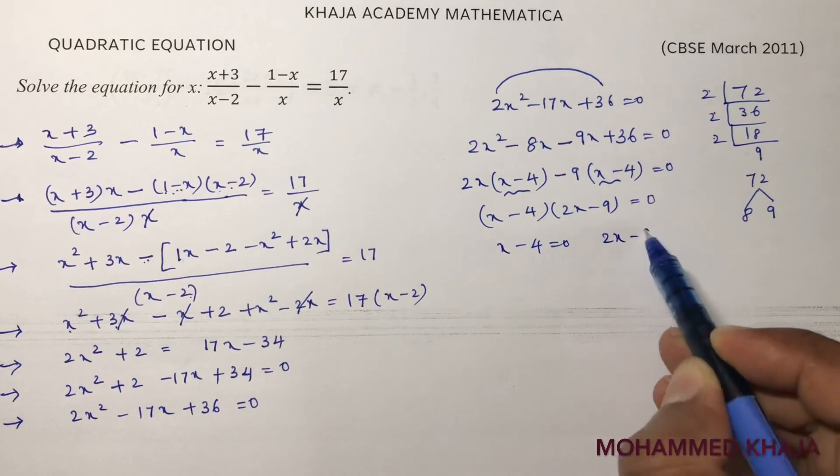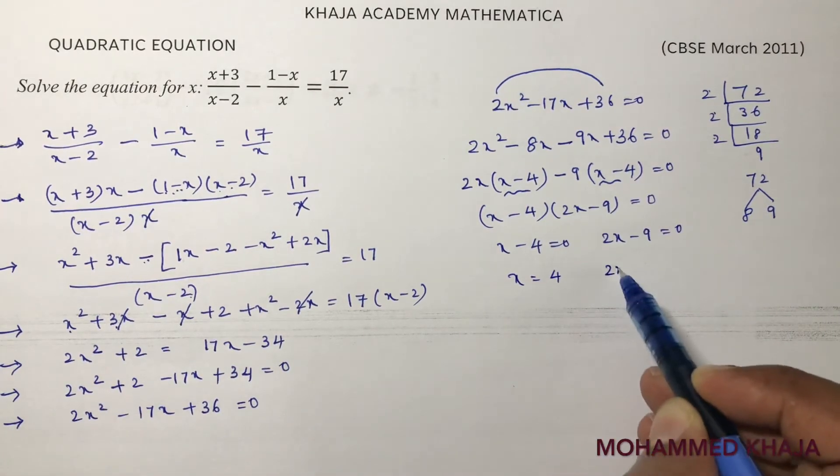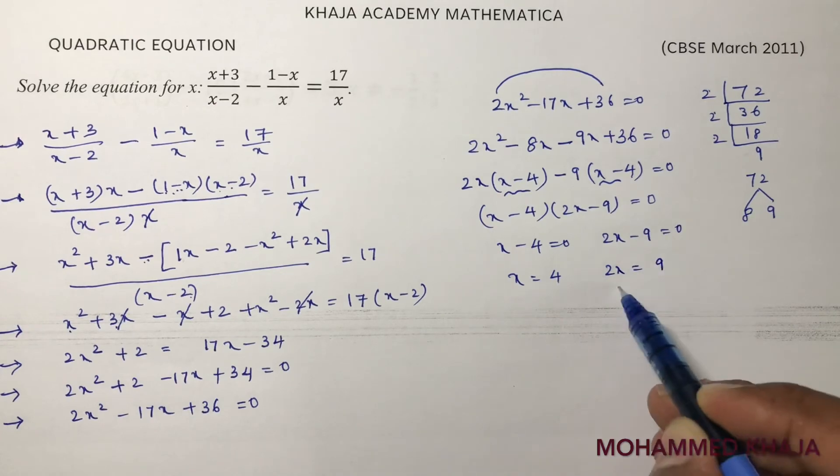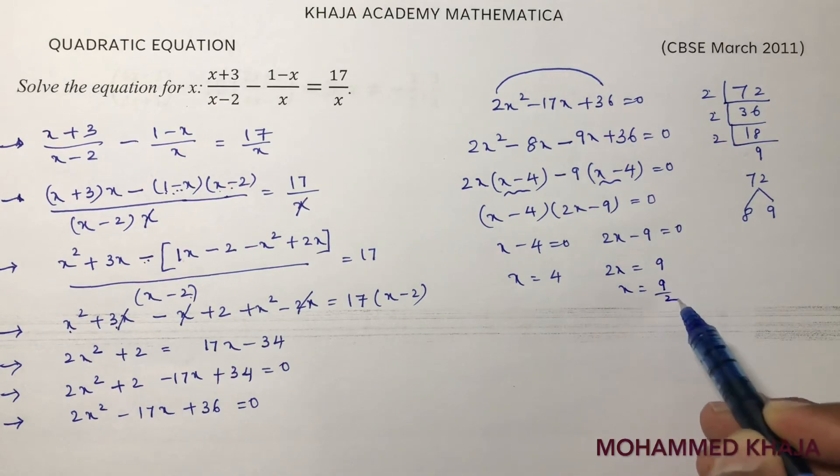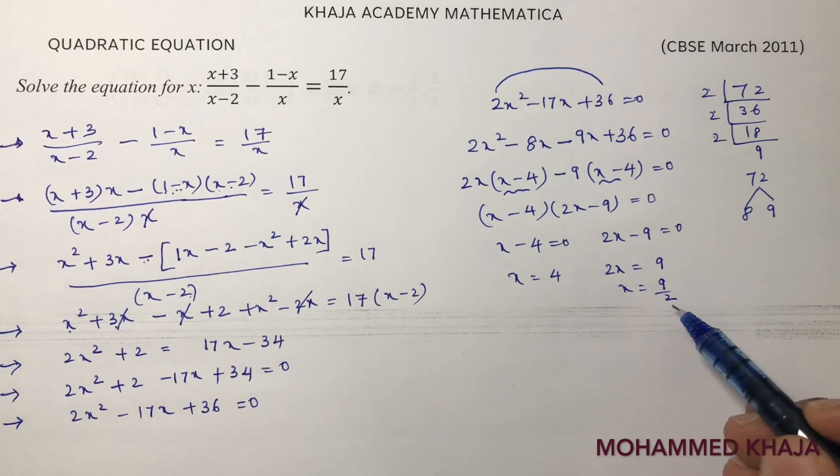x minus 4 equals 0, x equals 4. 2x minus 9 equals 0, 2x equals 9, x equals 9 by 2. So x equals 4 and x equals 9 by 2 are the values for x.